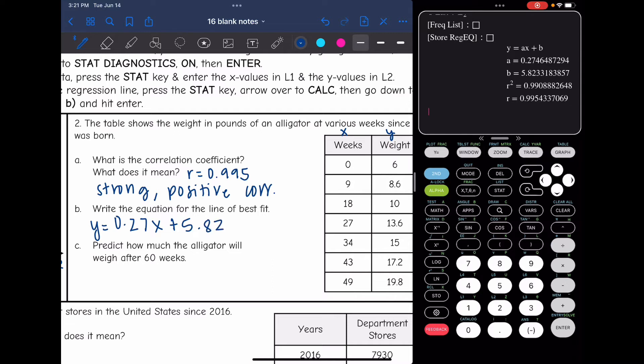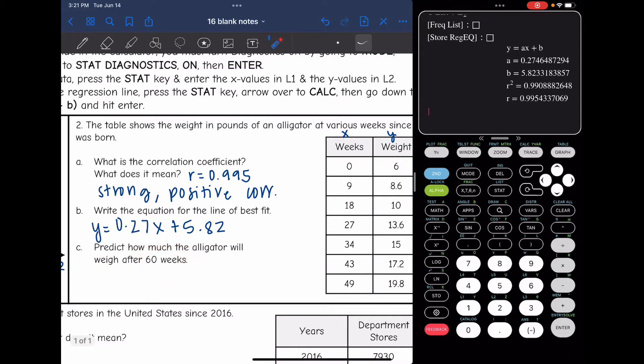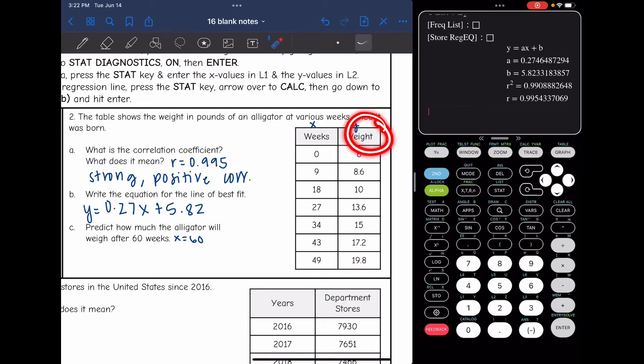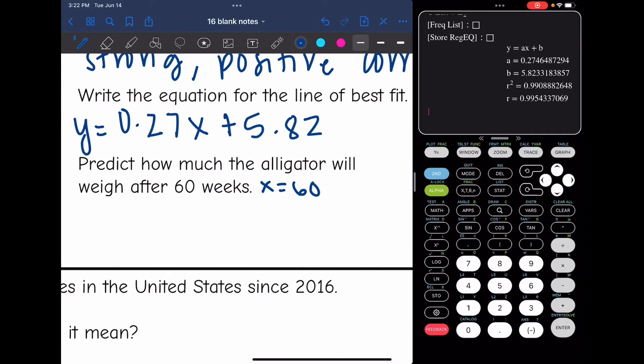And now we're going to use this equation to predict how much the alligator will weigh after 60 weeks. That is an x value that they gave me because they want us to determine the weight, which is y. So now I'm just going to replace x with 60. So it'll be y equals 0.27 times 60 plus 5.82. Now I'm just going to put that in the calculator, 0.27 times 60 plus 5.82.